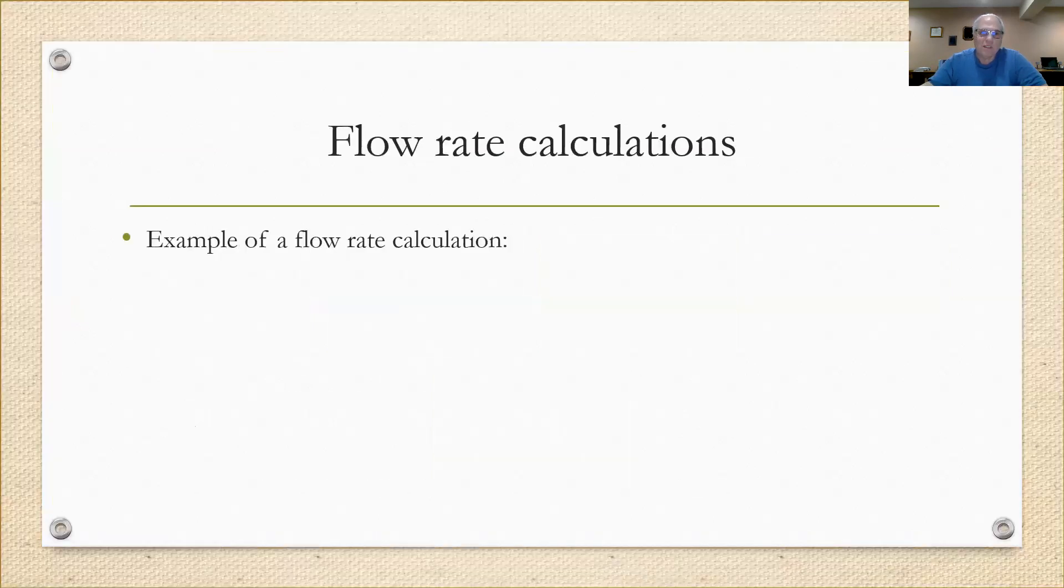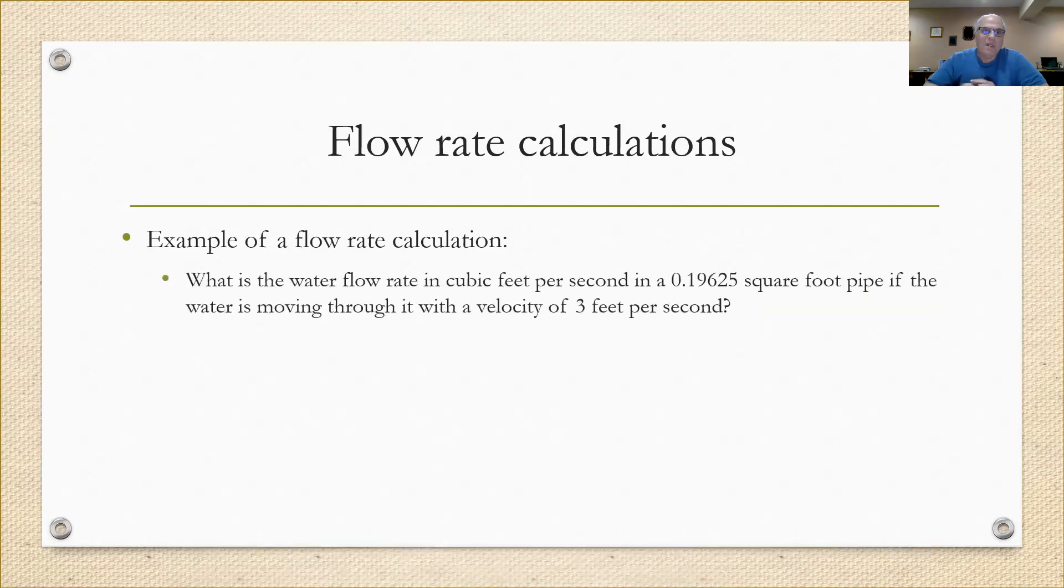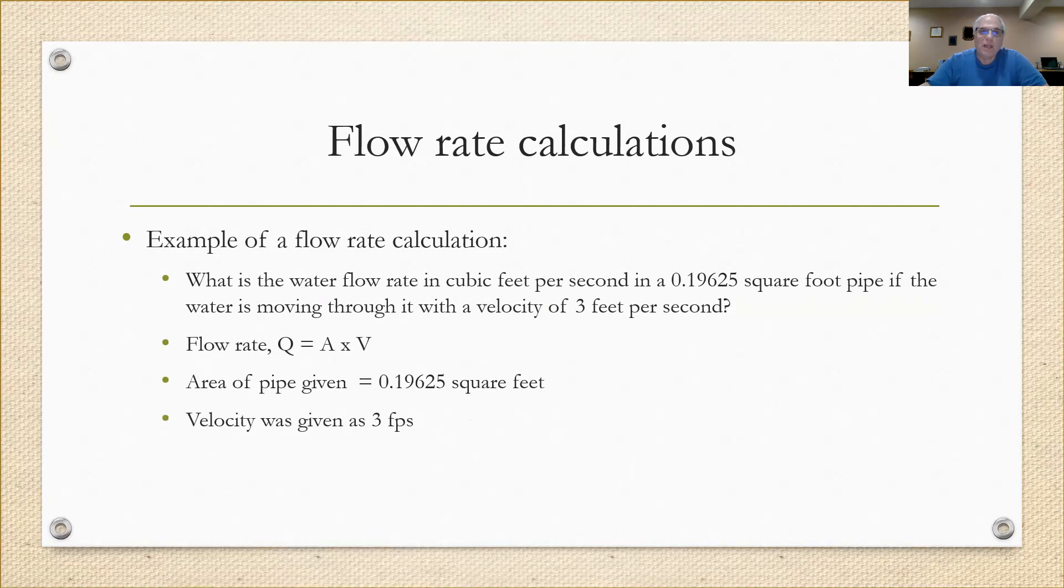Now here's an example flow rate calculation. What is the water flow rate in cubic feet per second in a pipe that has 0.19625 square feet of surface area, with water moving through that pipe at a velocity of 3 feet per second? When I set this up, I put my formula: Q equals A times V. The area of the pipe was given to me at 0.19625 square feet, velocity at 3 feet per second, so I multiply 0.19625 square feet times 3 feet per second, and I get 0.589 cubic feet per second. If I wanted to change that, I would multiply by 7.48 to get gallons per minute.